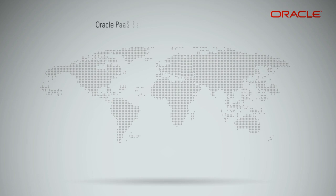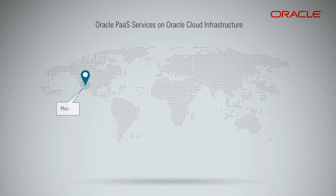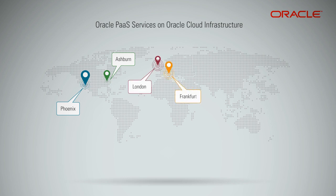There are several Oracle PaaS services that are now deployable on Oracle Cloud Infrastructure regions in U.S. West, Phoenix, Arizona; U.S. East, Ashburn, Virginia; Europe, London, and Frankfurt. We are working to add more regions and Oracle PaaS services that can be deployable on Oracle Cloud Infrastructure.